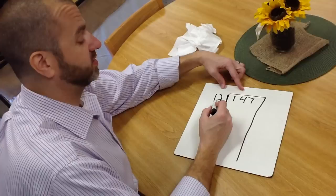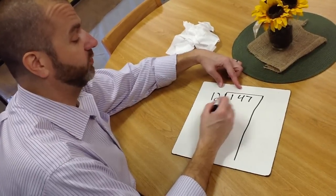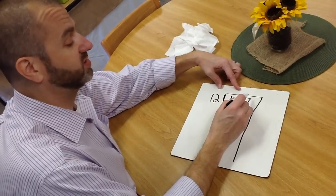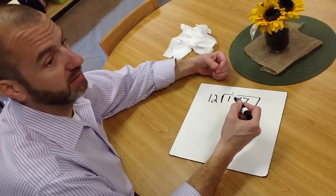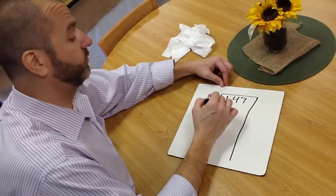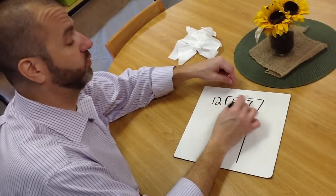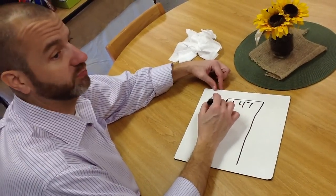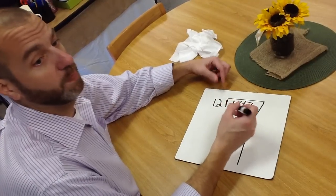So now what we're going to ask is actually, can 12 go into 147? Or a better way to ask that is, can we take 147 and split it into groups of 12, and if so, how many?